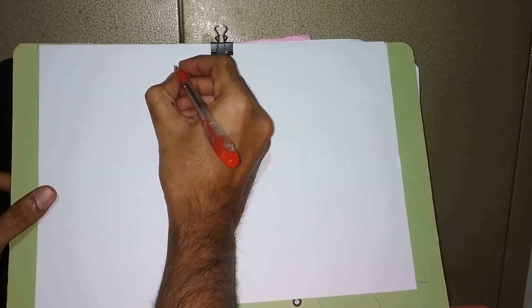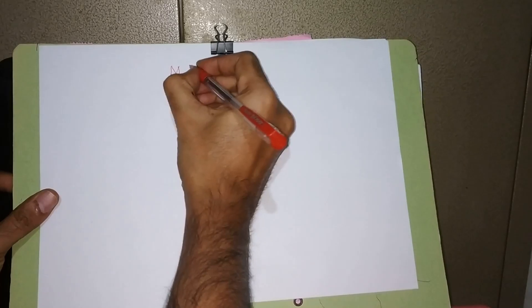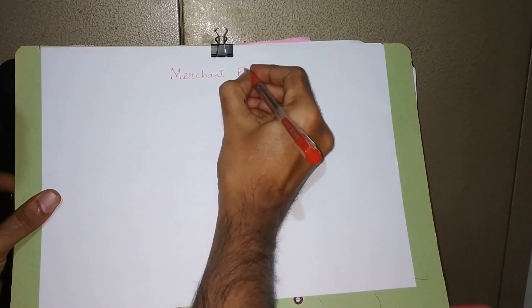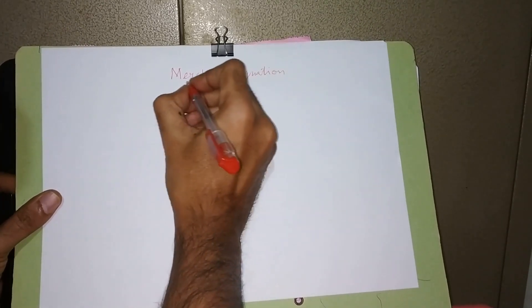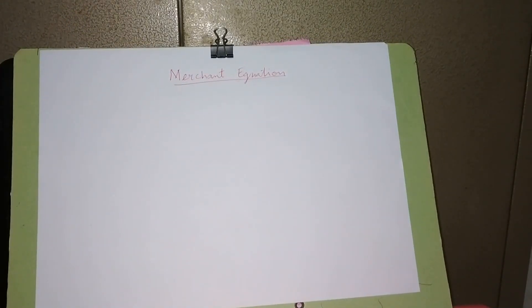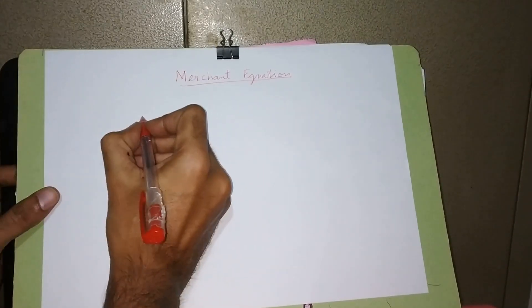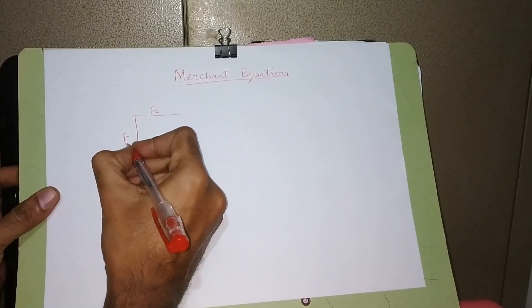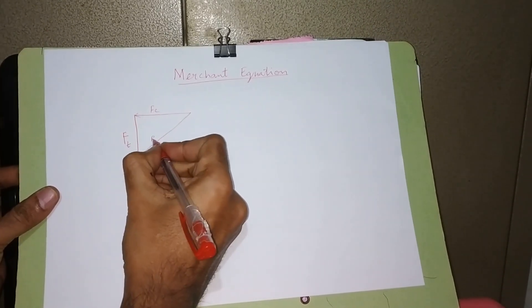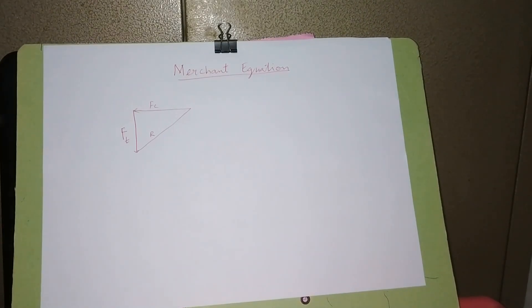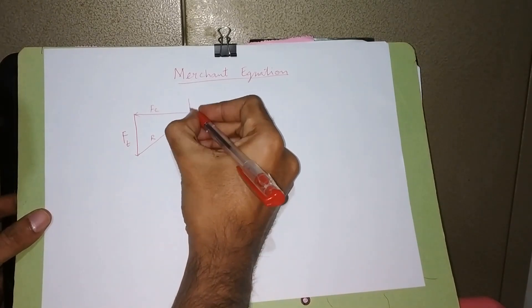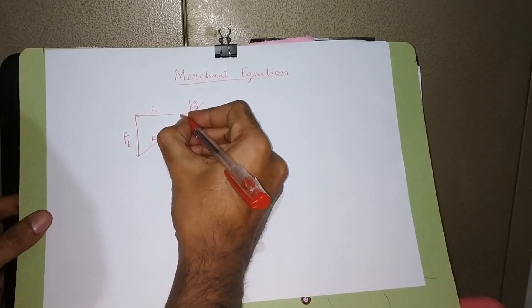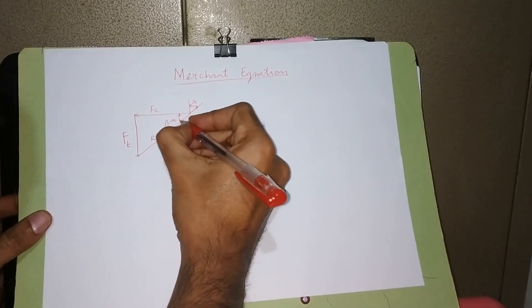So, we are going to consider the force system. We are going to use the shear force system for the purpose of deriving the Merchant Equation. We have the cutting force Fc and the tangential force Ft. The resultant has this angle alpha, that is the rake angle, and this angle — already we have known from previous derivation — is beta minus alpha.